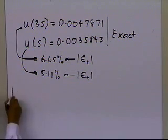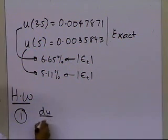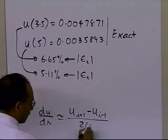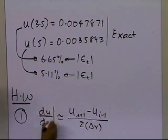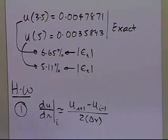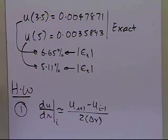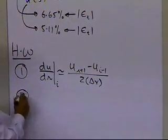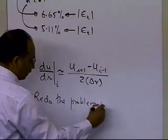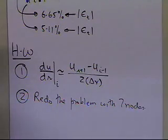For homework: first, use the central divided difference approximation for du/dr — that is, (u_{i+1} minus u_{i-1}) divided by 2·delta r — instead of the forward difference. Both the second derivative and first derivative approximations will then have order of accuracy delta r squared, giving more accurate answers. Second, redo the problem with seven nodes and observe whether accuracy improves.